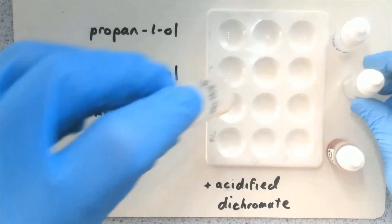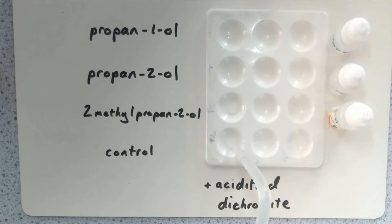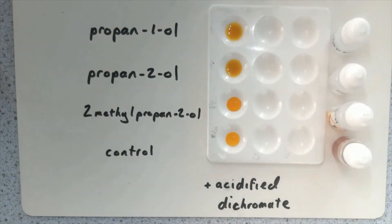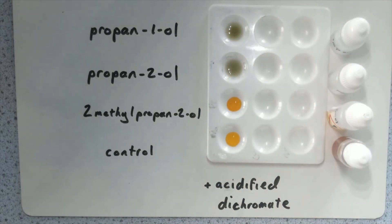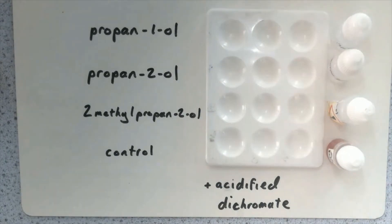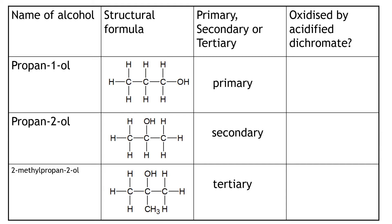This is speeded-up footage of an experiment in which I've added propan-1-ol, propan-2-ol, 2-methylpropan-2-ol, and a water control on a dimple tile, and I've added orange acidified dichromate to it, which is a mild oxidising agent. You can see that the primary and the secondary alcohol — propan-1-ol and propan-2-ol — have reacted with acidified dichromate to give a colour change from orange to green-blue. We can conclude that primary alcohols such as propan-1-ol can be oxidised by acidified dichromate.